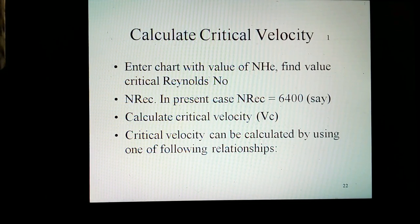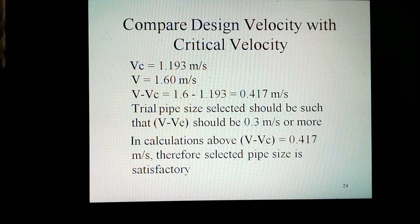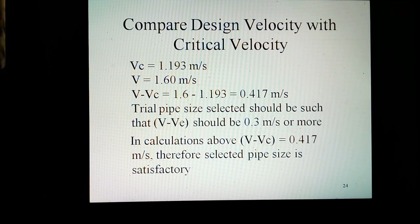Critical velocity can be calculated by using one of the following relationships. Comparing design velocity with critical velocity: V_c equals 1.193 meters per second. V equals 1.60 meters per second. V minus V_c equals 1.6 minus 1.193 equals 0.407 meters per second. The trial pipe size selected should be such that V minus V_c should be 0.3 meters per second or more. In the above calculation, V minus V_c equals 0.417 meters per second. Therefore, the selected pipe size is satisfactory.